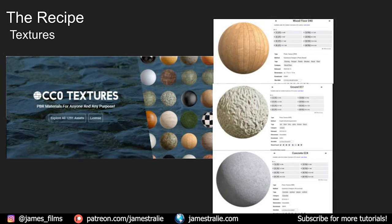For this scene, we're kind of at a mid-range, wide-angle shot, so we're going to need like a 2K or 4K. I've linked these again in the description. We're going to be using the Woodfloor 40, the Ground 27, which is this sandy surface, and then this kind of plaster wall Concrete 24. So those are the three textures you're going to need for this render.